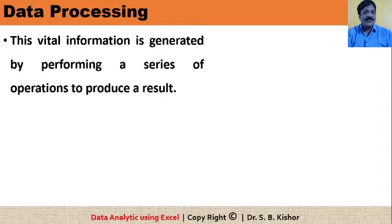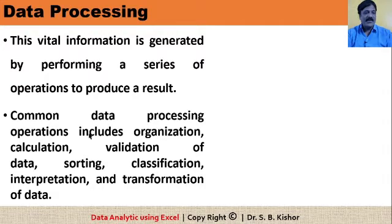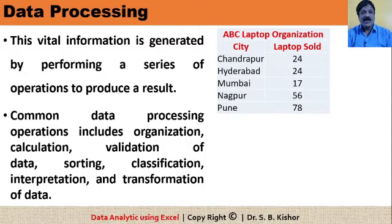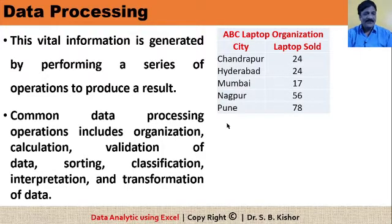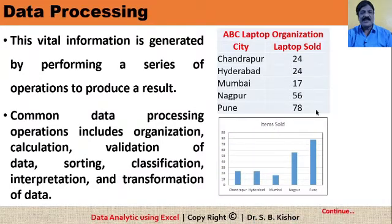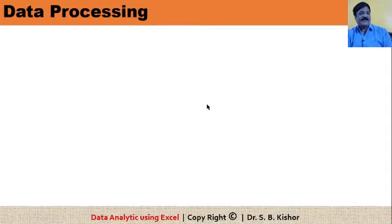A question arises: what are the common operations? This vital information is generated by performing a series of operations to produce a desired result. Common data processing operations include: organization and calculation, as we have seen in the earlier slide; validation of the data; sorting — for example, you may represent the data in sorted order according to city; and classification — if you have an additional field like state, you may classify the data according to state, like Maharashtra or Andhra Pradesh.